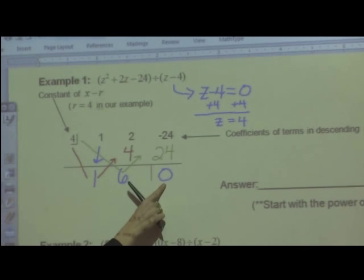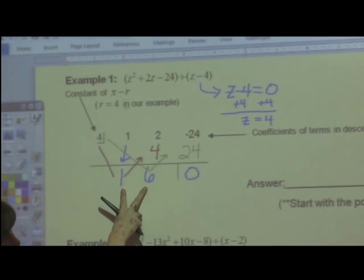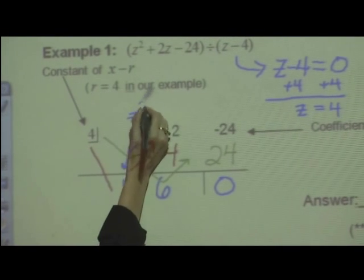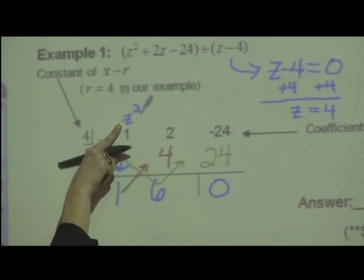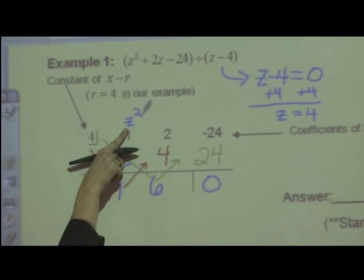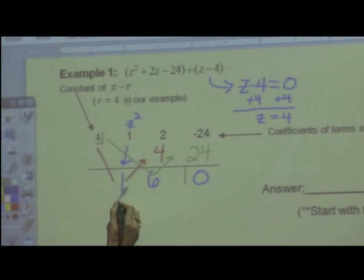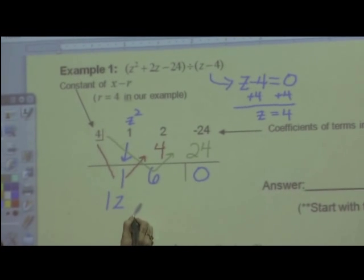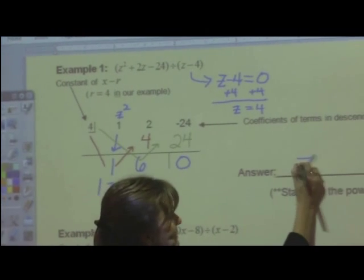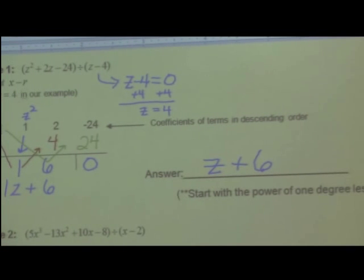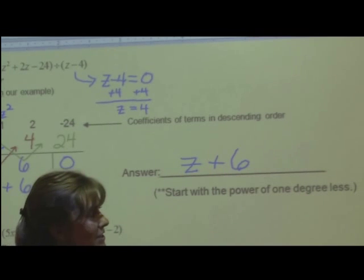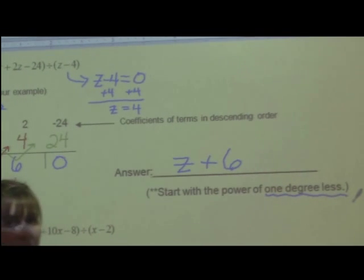And this part right here is your remainder. This part is your answer. Now the important thing to remember is that I started with a z squared equation, a quadratic. When I divide out one of the zeros, it's no longer a z squared or a quadratic equation. It drops one degree, so this would be one z plus six. My answer would just be z plus six. The power that you start with, your answer is always one degree less.